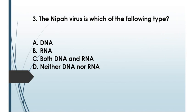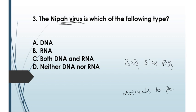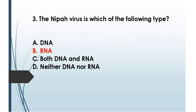Question number three: the Nipah virus is of which type? The Nipah virus is generally produced from bats or sick pigs. It can transfer from animals to people as well as spread between people. The answer is option B: RNA type.